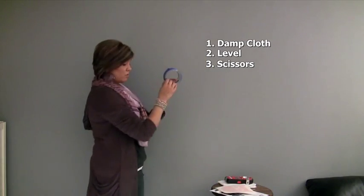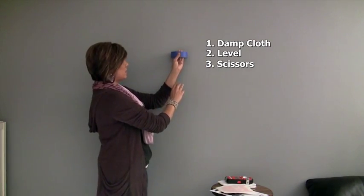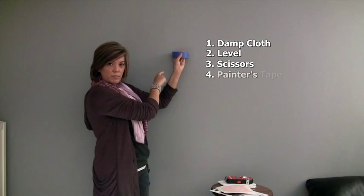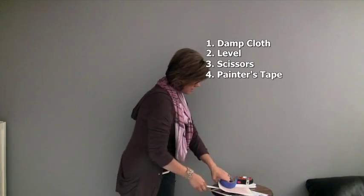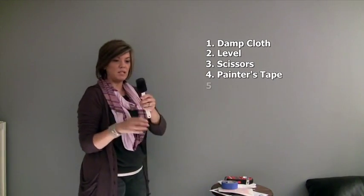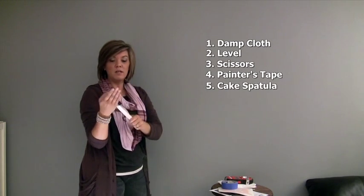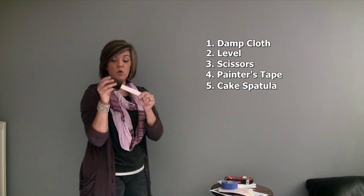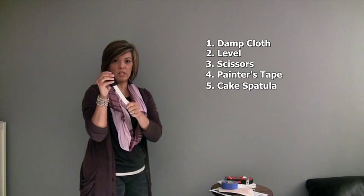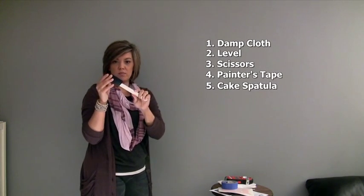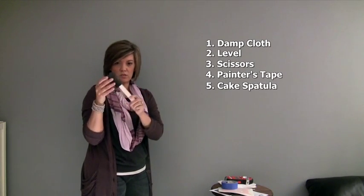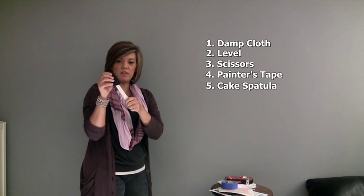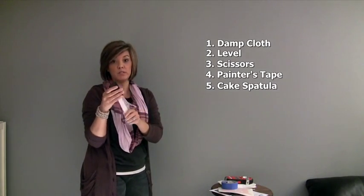Also, to hold the decal to the wall while we're applying it to keep it level, we're going to use a bit of painter's tape. And last, but not least, is a cake spatula. You need one of these, no wimpy cake spatulas. You need it to be rigid, and I got this one for a buck. I just picked it up at the dollar store or something, and you can feel that it's a little more rigid and not floppy, and that's really important.